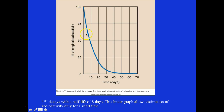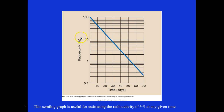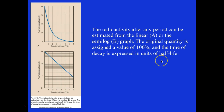A semi-log graph is used for estimating the radioactivity of iodine-131 at any given time. You can look at how many days have passed and how much has decayed — at the 50% mark it's about eight days, and it continues for a long time. Radioactivity after any period can be estimated from either the linear graph or the semi-log graph. The original quantity is assigned a value of 100%, and time of decay is expressed in units of half-life — you can figure out how many half-lives have elapsed for any time period.